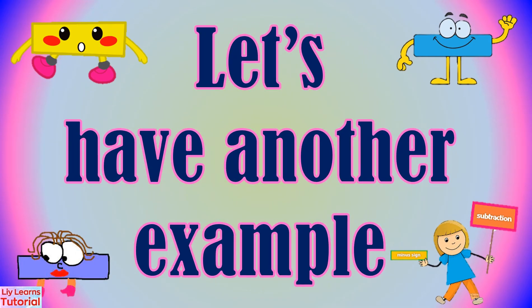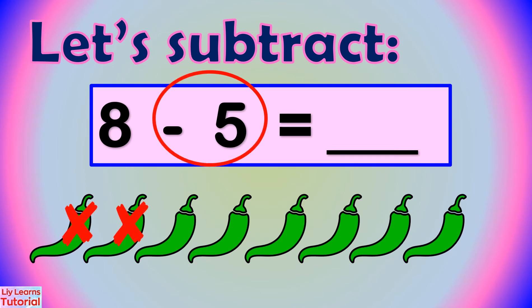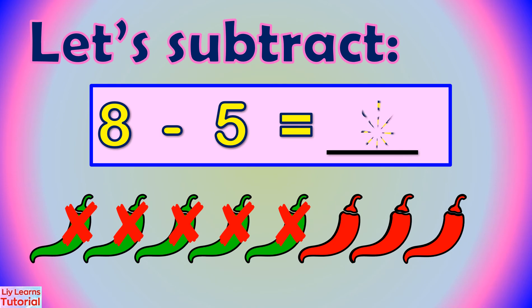Let's have another example. Let's subtract 8 minus 5. We take away 5: 1, 2, 3, 4, 5. Let's count how many chilis are left. 1, 2, 3. 3 chilis. So, 8 minus 5 equals 3.